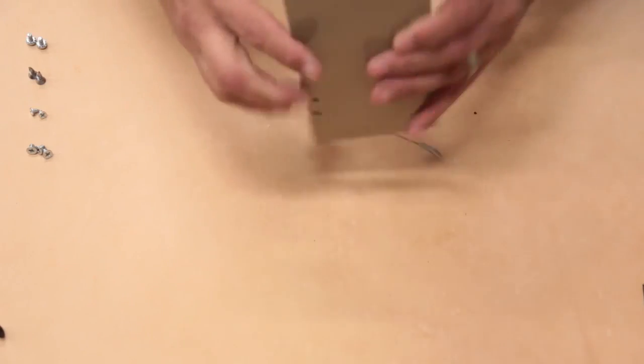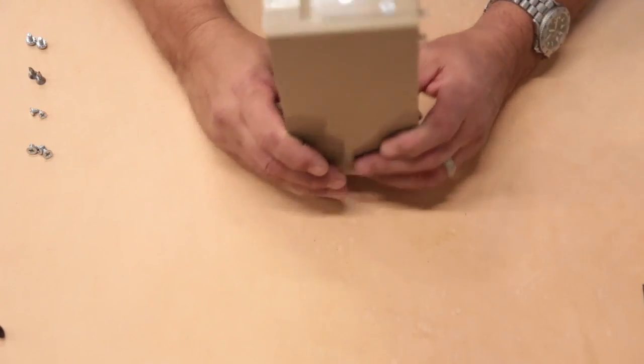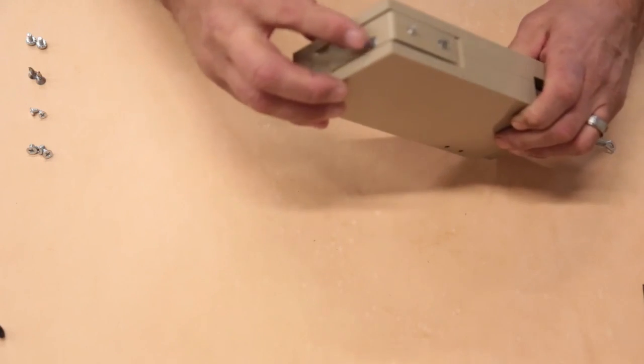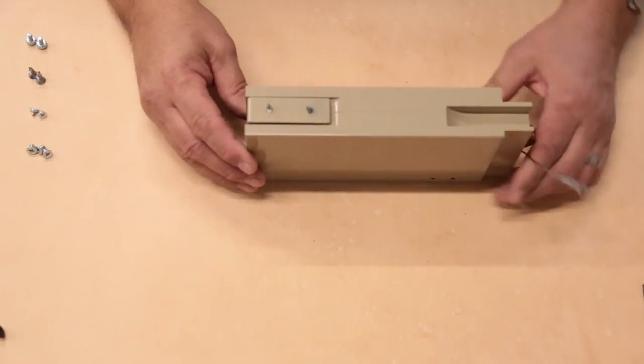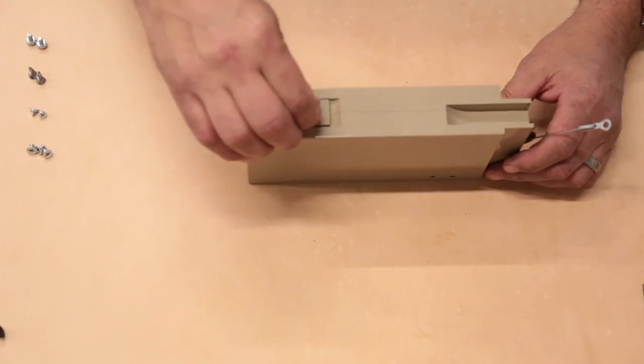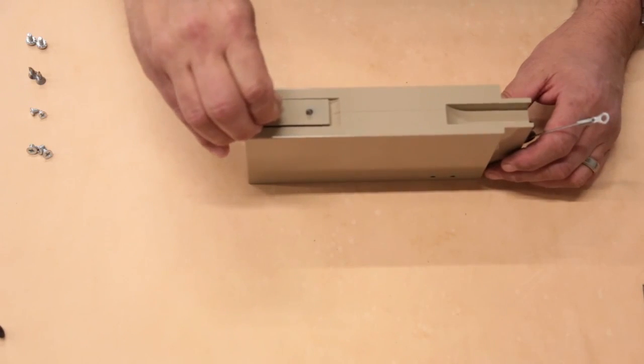We also pre-attach an L bracket. We've got two mounting screws on that L bracket, and also to make it easy, we put two self-tapping screws to go right into the back edge of the door frame, right into that L bracket.